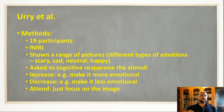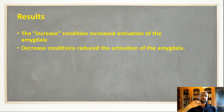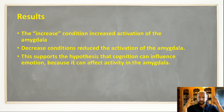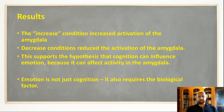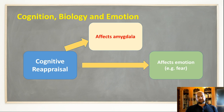In the attend condition, participants simply focused on the image and noticed the details without thinking about any emotional aspect. The results showed that in the increased condition — reappraising to increase emotional effect — activity in the amygdala went up. In the decreased condition — reappraising to reduce negative impact — amygdala activity decreased. This supports the idea that the way we think about something can influence emotion by influencing activity in the amygdala. So emotion is not just cognition and not just biology — it can be the interaction of both, with one influencing the other to produce emotion.